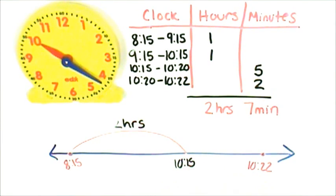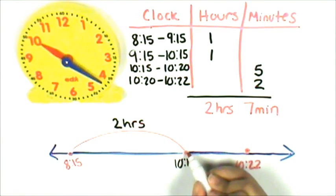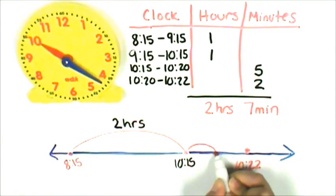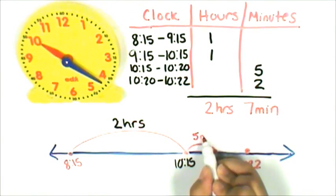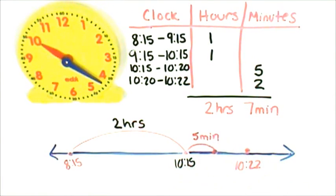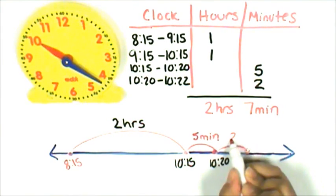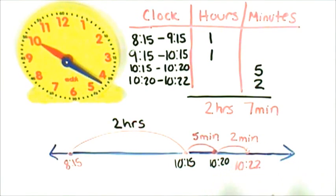From 10:15 I'll jump forward five minutes. And that is 10:20. From 10:20 I'll jump forward two minutes. And that is 10:22.